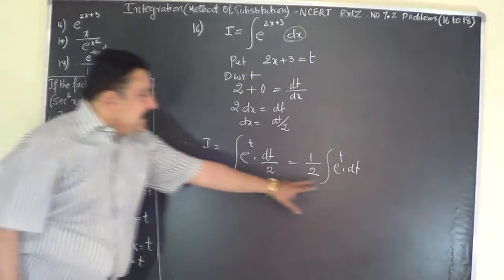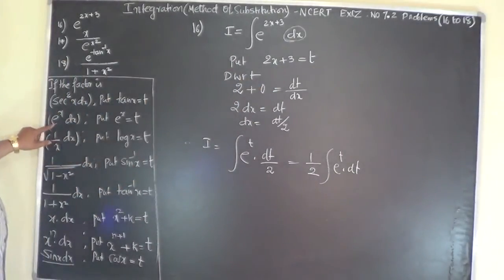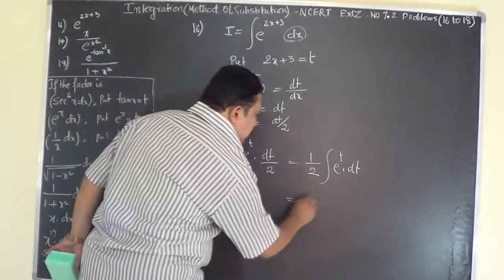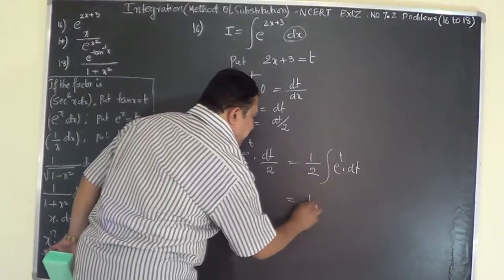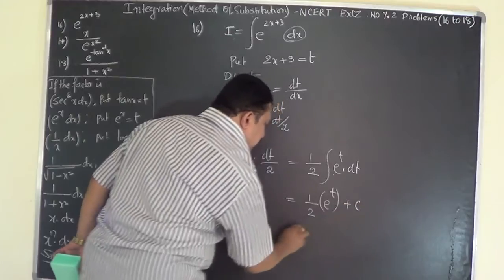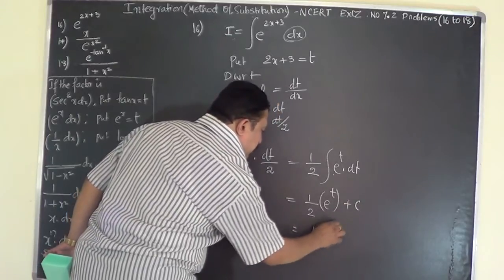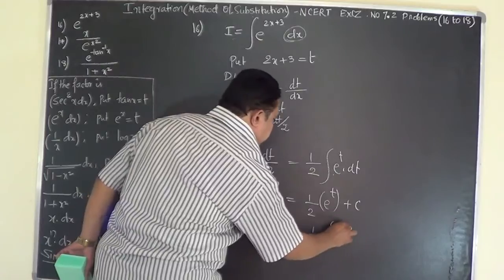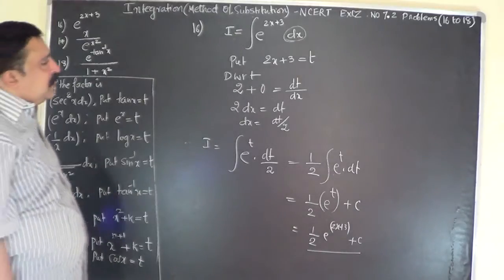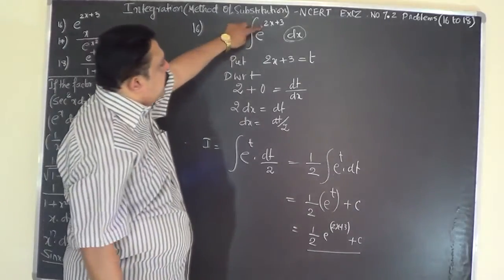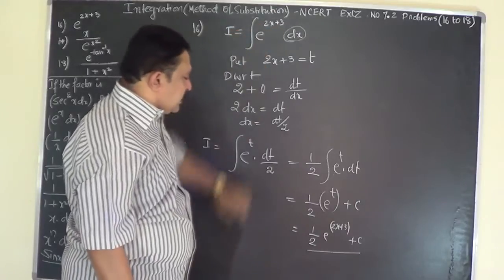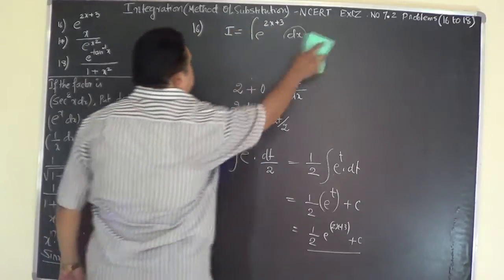The problem is now similar to the standard form of integral e to the power of x dx. So the integration gives half of e to the power of t, plus c. Substituting back, t equals 2x plus 3, so the answer is one half e to the power of 2x plus 3, plus c. Very simple problem — you can also get this by inspection.